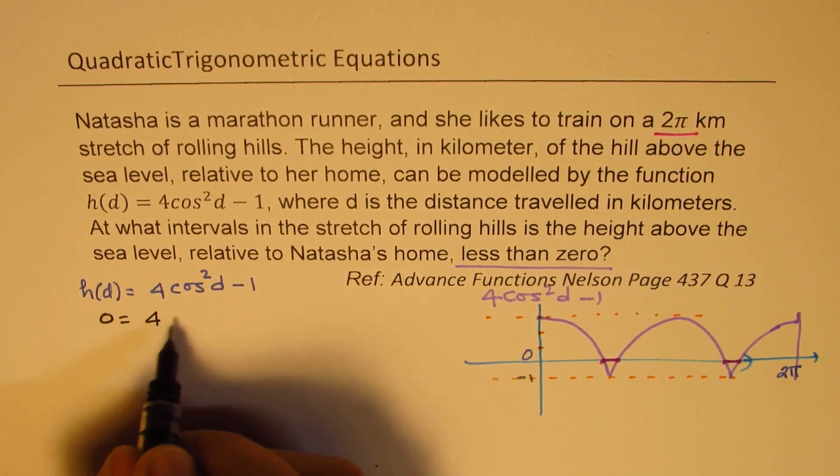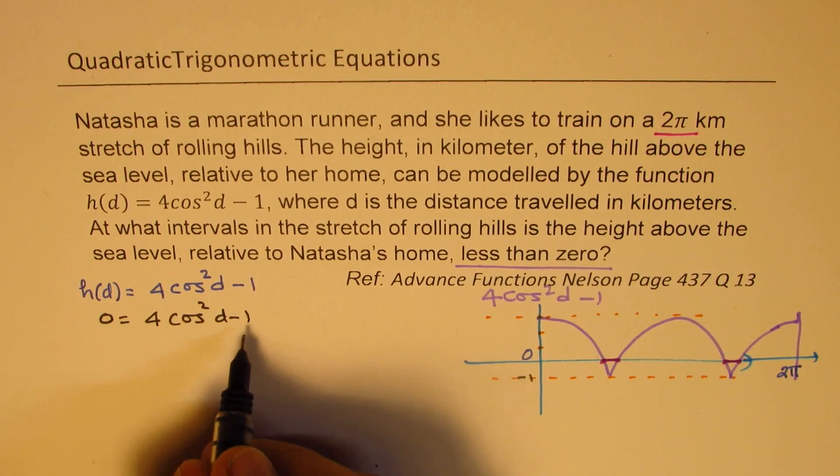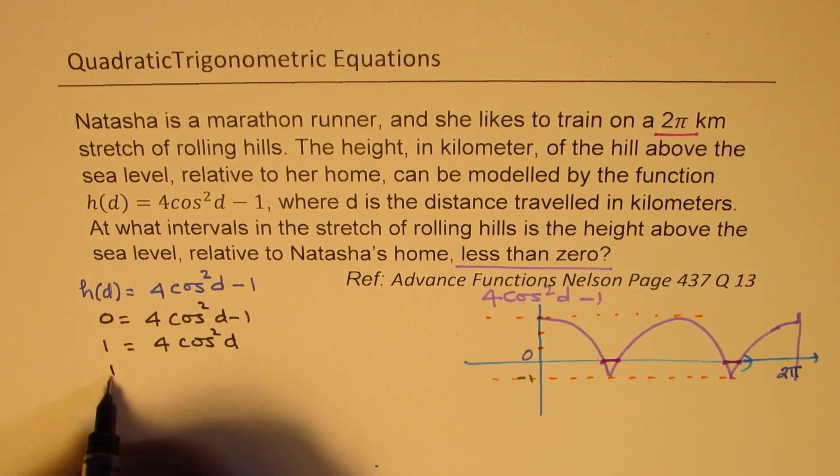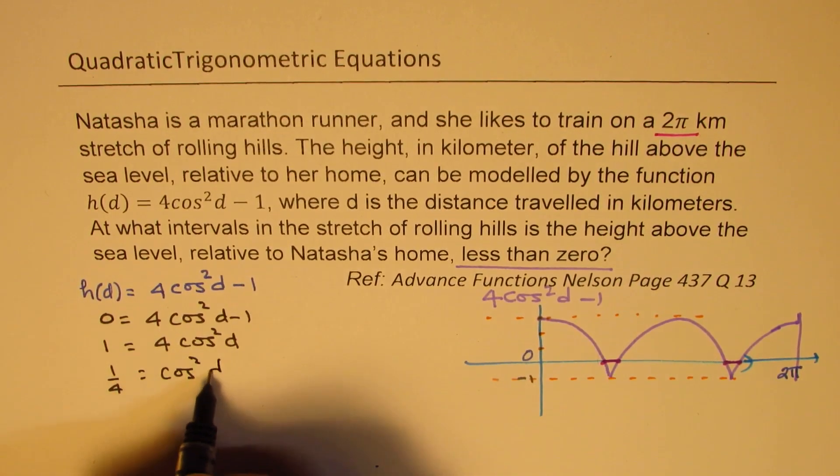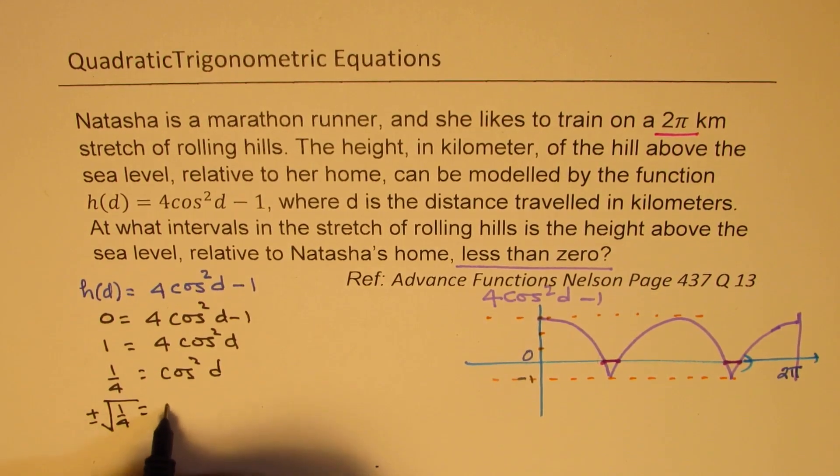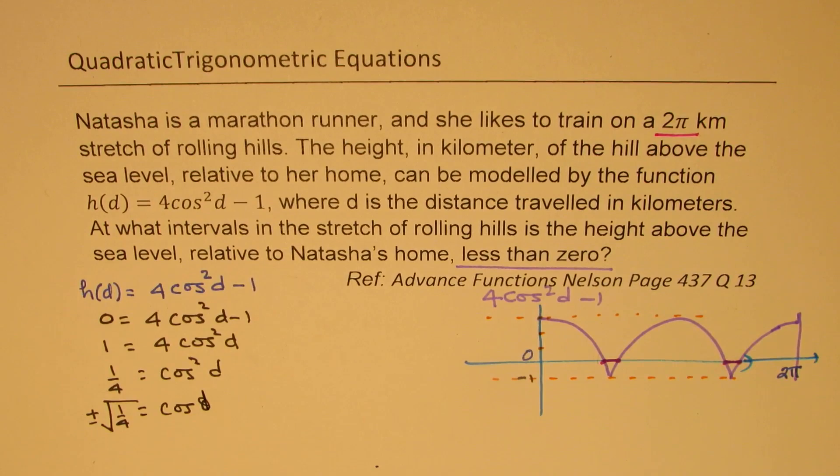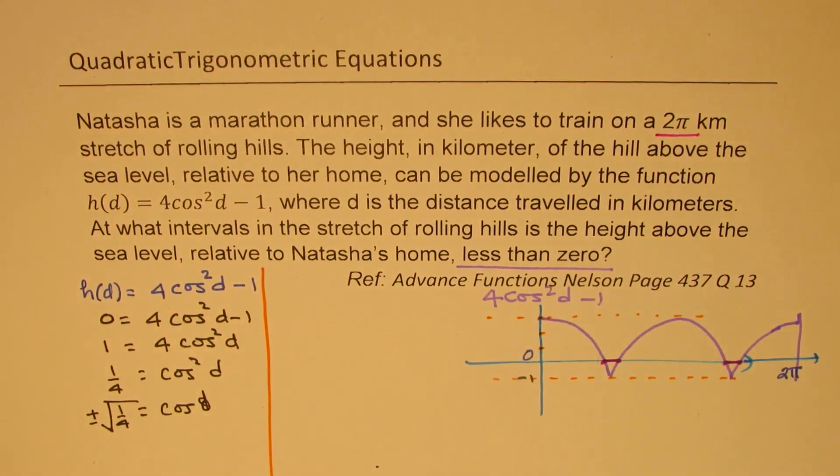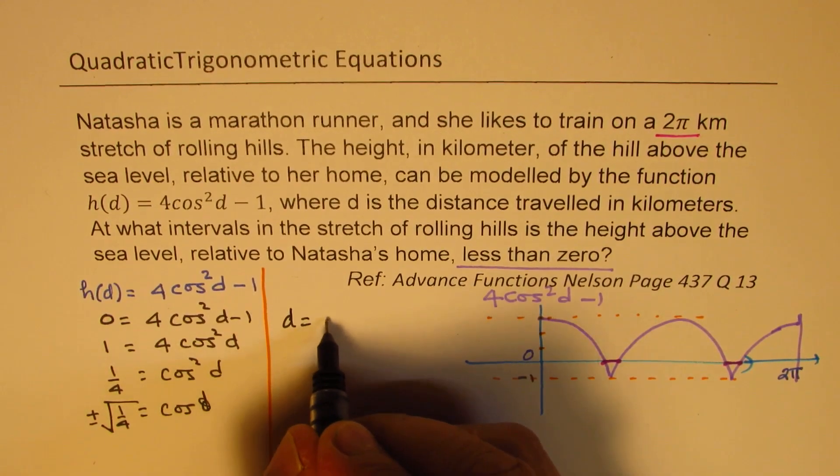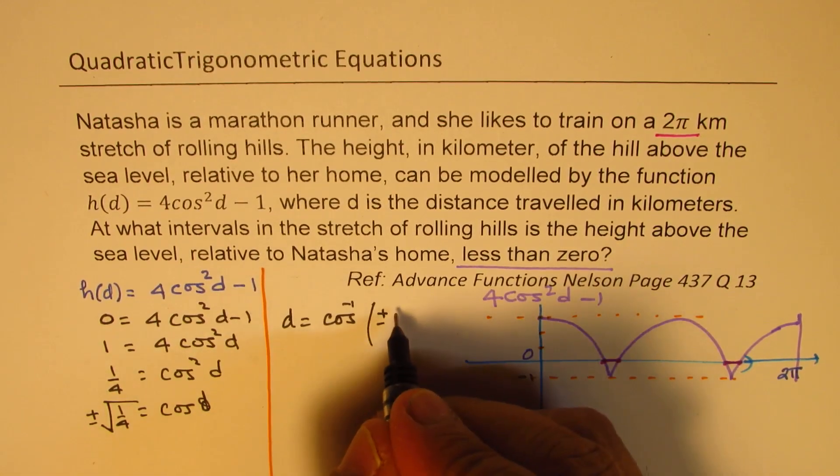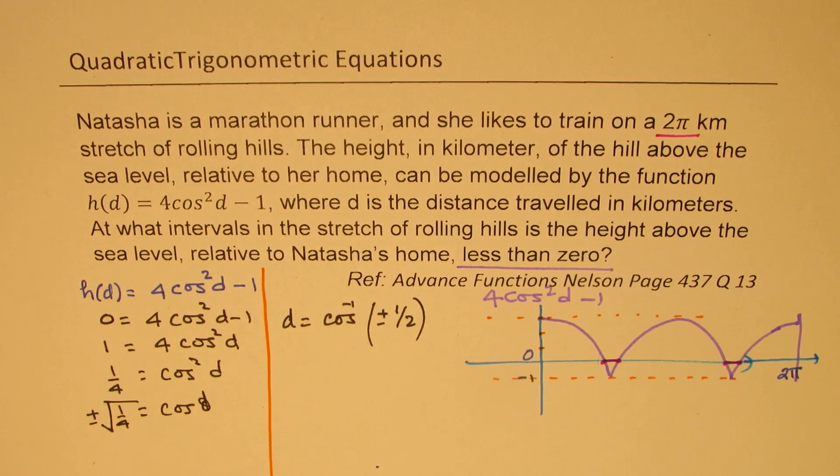We will get this to 0 = 4cos²d - 1. Taking 1 on this side gives us 4cos²d. Dividing by 4 we get this as cos²d. Taking square root, we have to do plus minus square root of 1 over 4, which is cos d. So that gives you solutions, 4 solutions. So what is d equals to? So d equals to cos inverse of plus minus 1 over 2. Perfect. So that is how we are going to get this solution.